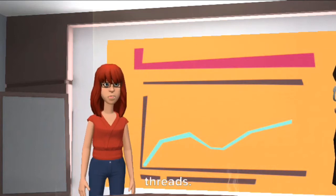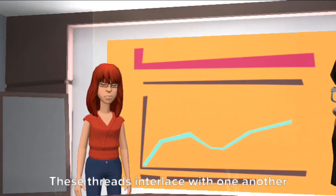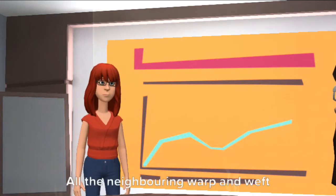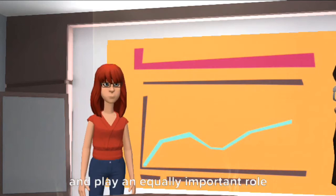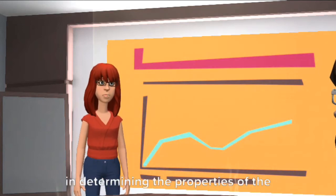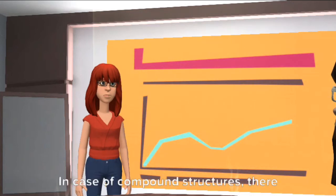These threads interlace with one another perpendicularly. All the neighborhood warp and weft threads are parallel to one another and play an equally important role in determining the properties of the fabric.